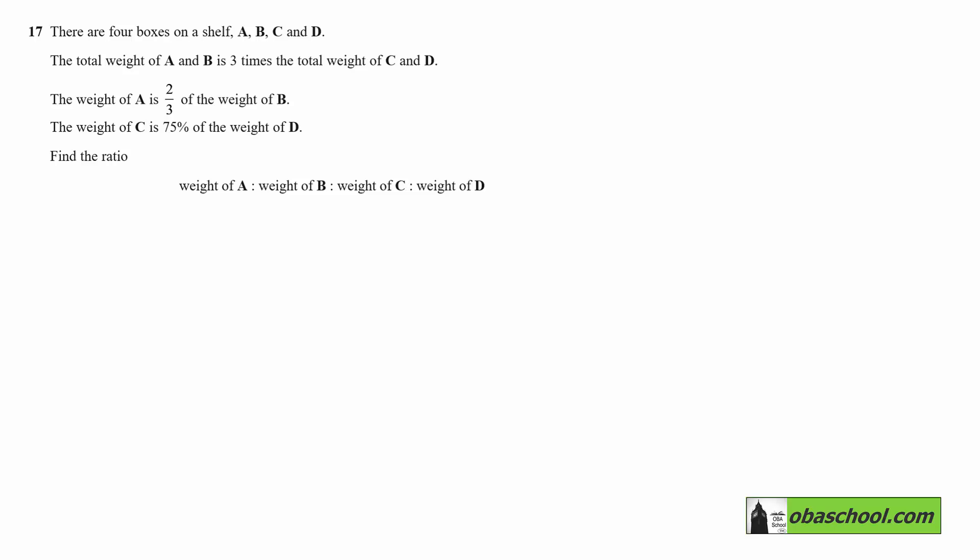We want to find the ratio weight of A to weight of B to weight of C to weight of D. If we just go with this line here, if we had the ratio just weight of A to weight of B, that tells us that it would be two to three.